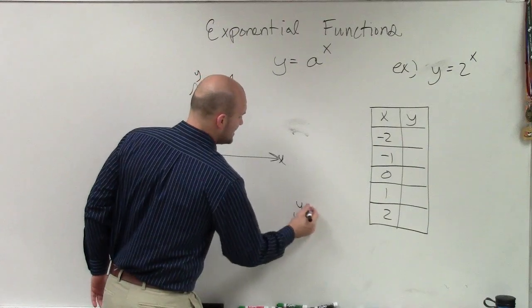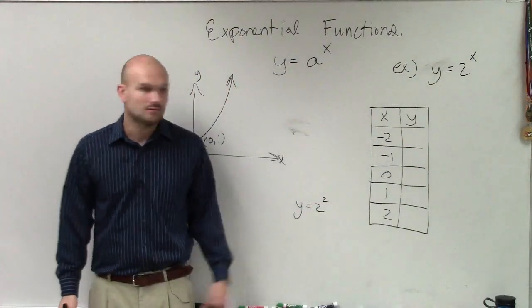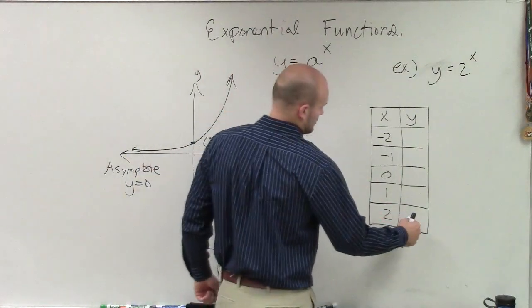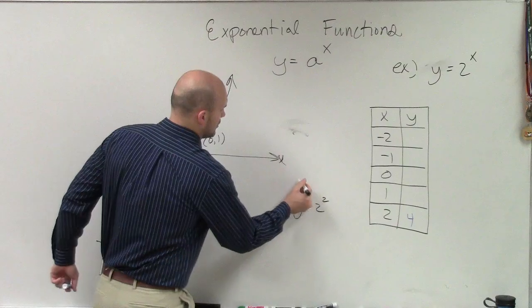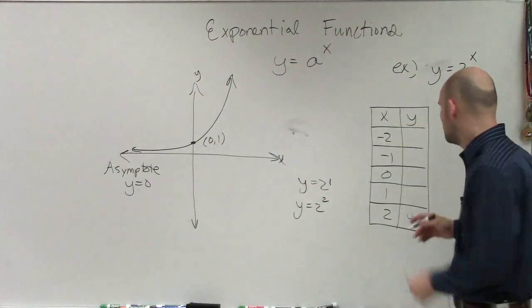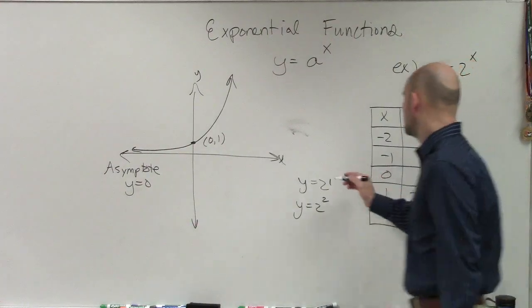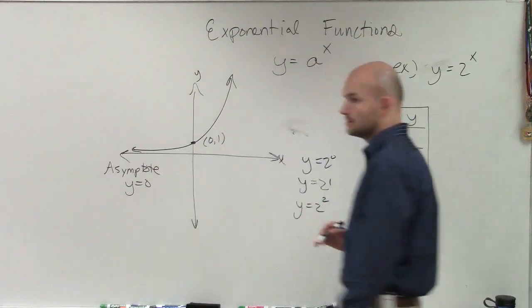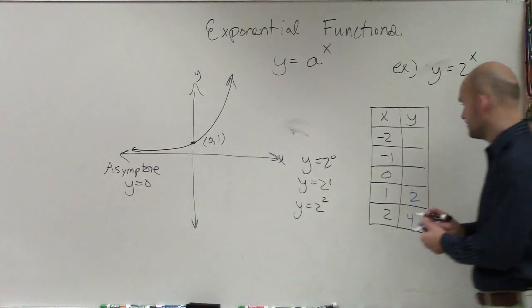So let's start with the positive so we can remember what it looks like. So I'd have y equals 2 squared. Well, we know 2 squared, that's 4. y equals 2 to the first power, 2. So then we have y equals 2 to the 0 power, 1. Very good. That's always going to be 1, right?